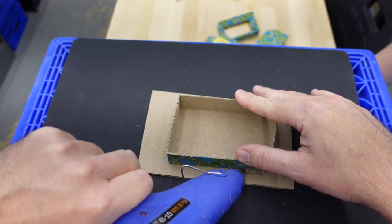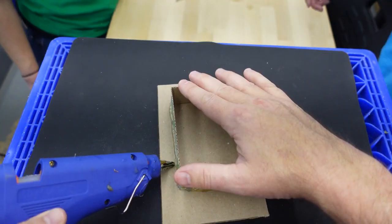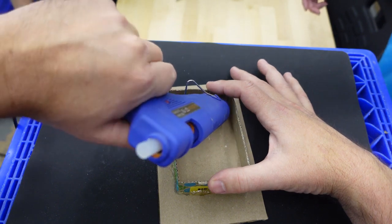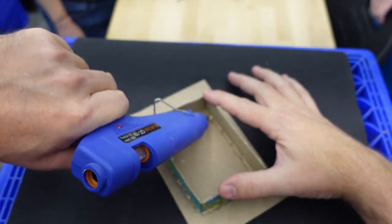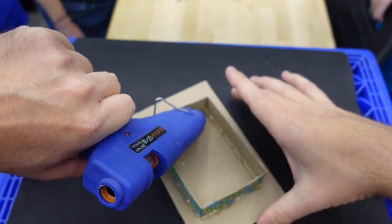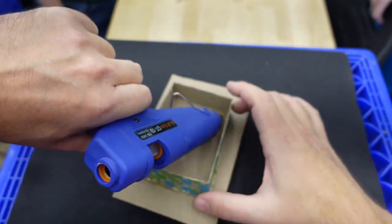These guns are not just for crafting. This is like a caulk job on your bathtub. I guess you could use glue for that. You could use a heated glue gun.